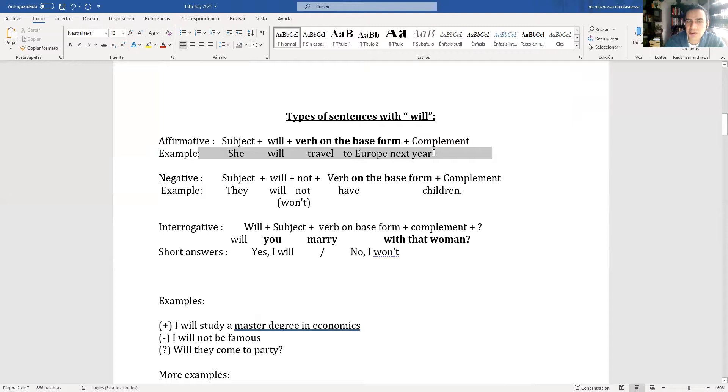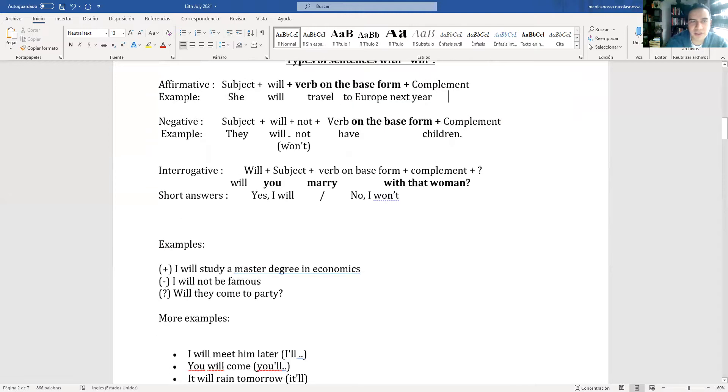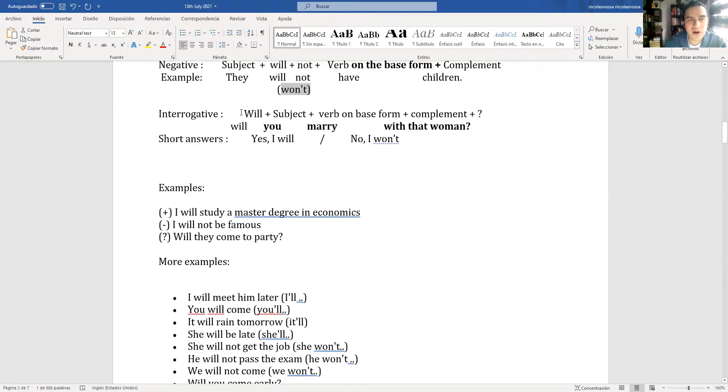Example: She will travel to Europe next year. Ella viajará a Europa el próximo año, prediction. Negative: subject plus will plus not plus the verb on the base form plus complement. Example: They will not have children. Ellos no tendrán hijos. Contraction: won't. They won't have children.